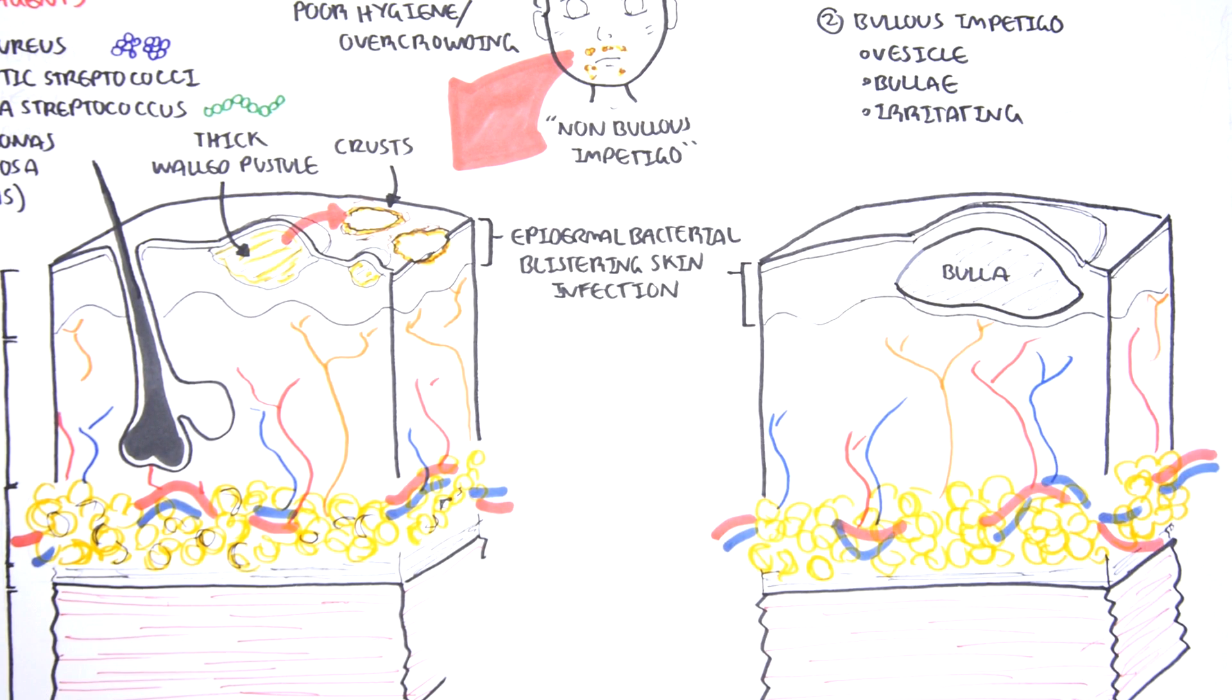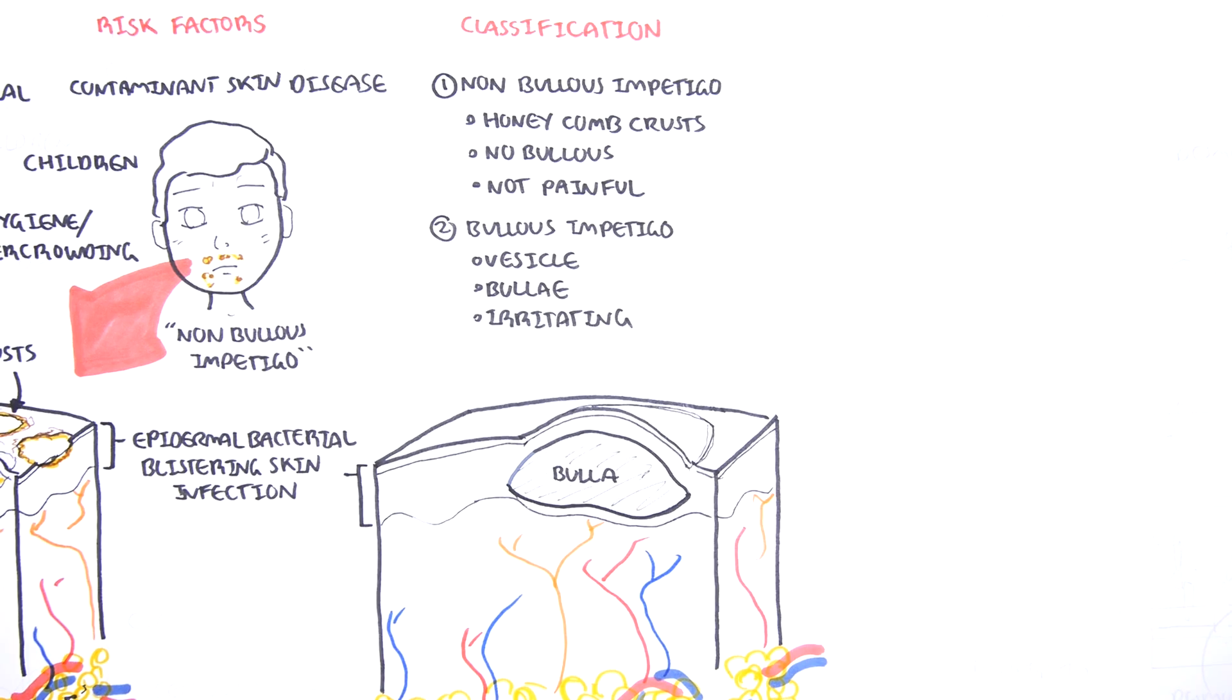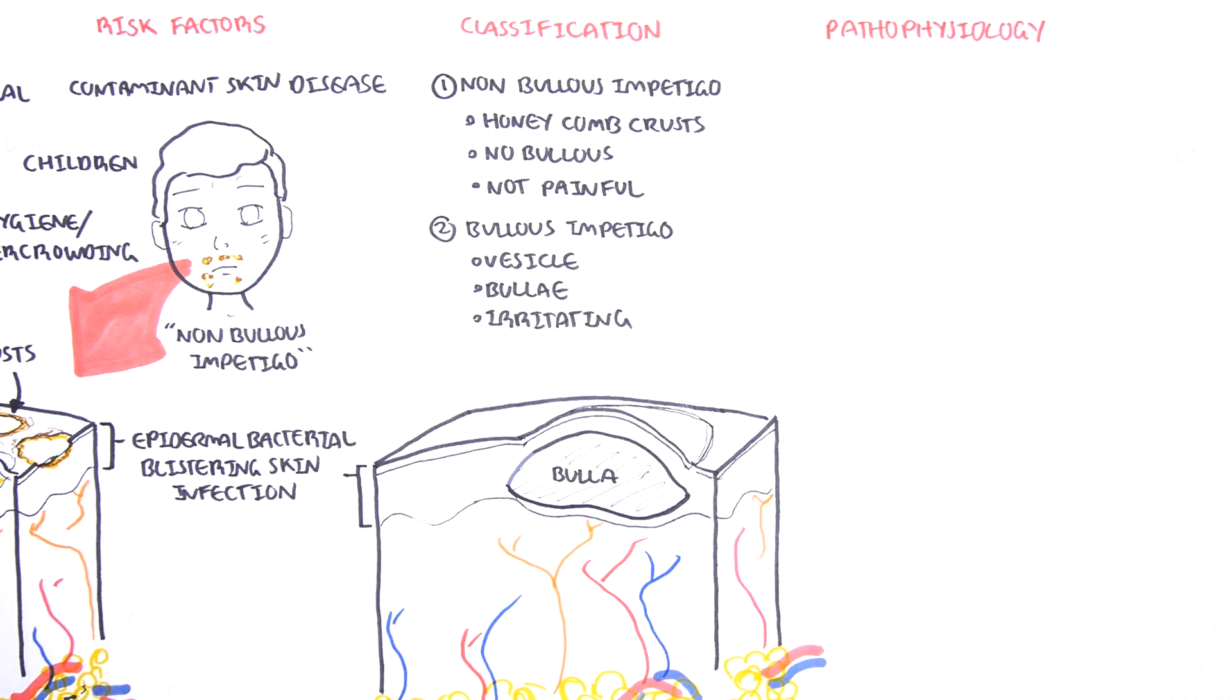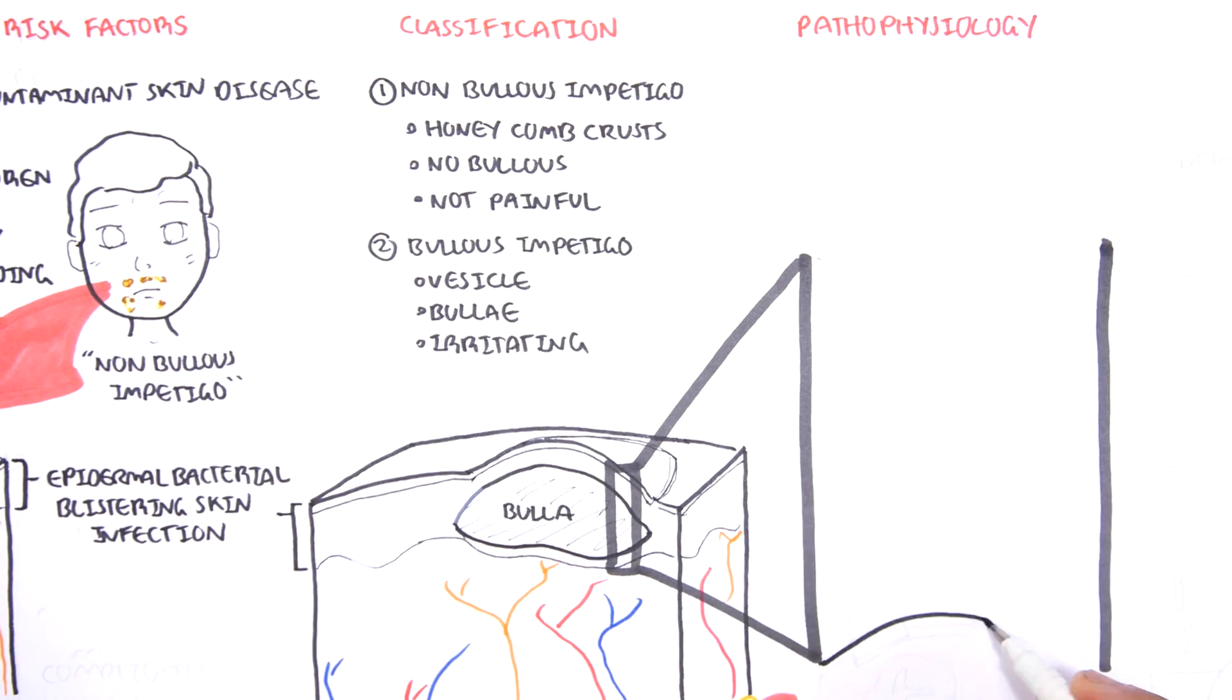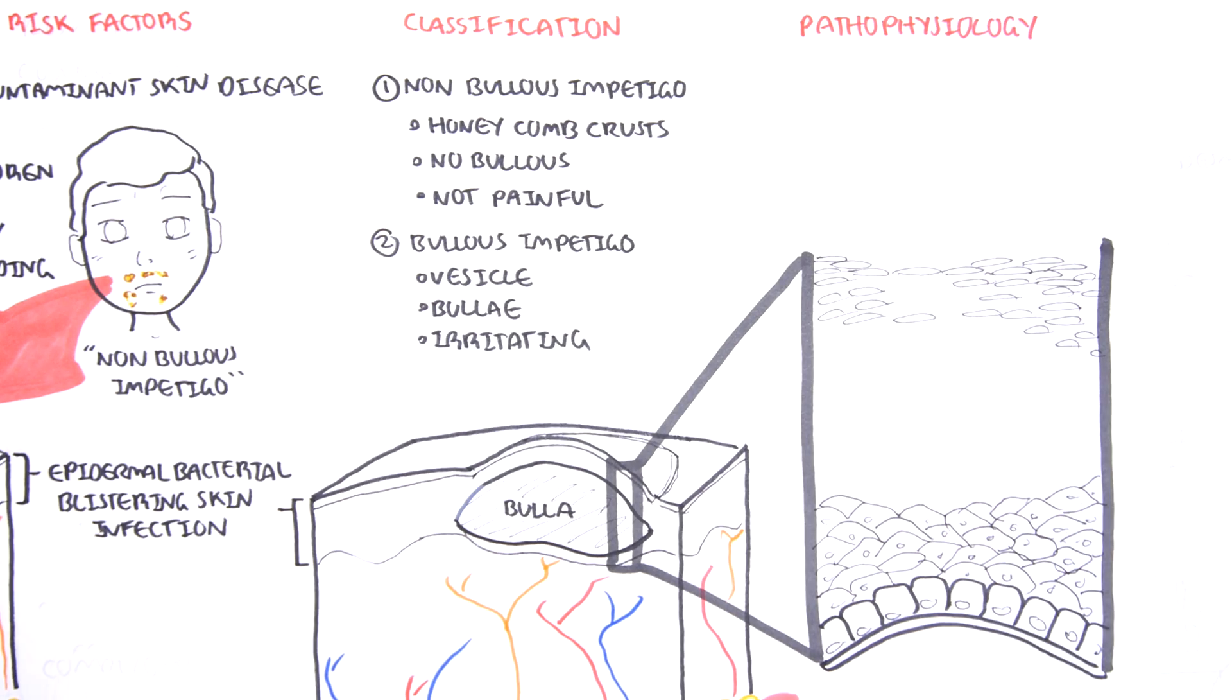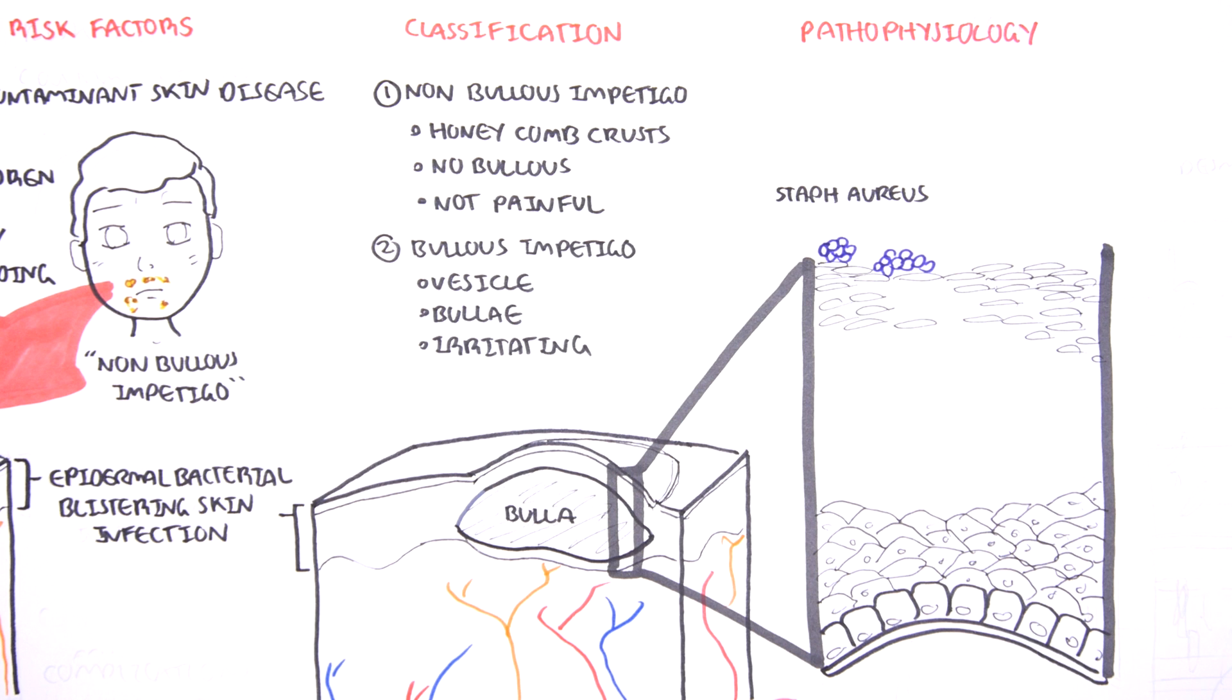Let's now learn about the pathophysiology of impetigo by focusing on bullous impetigo as an example. The main causative organism of bullous impetigo is Staphylococcus aureus. Let's zoom into the epidermis to see how it works. Remember that the basement membrane separates the epidermis from the dermis. Above the basement membrane, you have the stratum basale which divides, and as it divides, the cells migrate up and lose blood supply. On the very top of the epidermis, you have commensal microorganisms such as Staphylococcus aureus, which is your normal microflora.